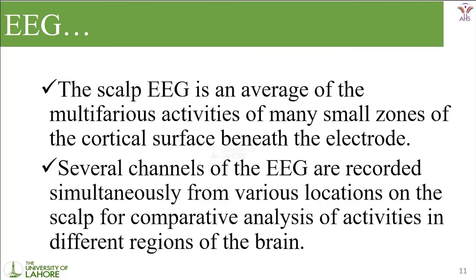Several channels of EEG are recorded simultaneously from various locations on the scalp for comparative analysis of activities in different regions of the brain. It is not like placing a single scalp electrode and catching signals from one specific area. Since we don't know which specific area controls a person's right hand in advance, we have to place several channels of EEG so that we can easily locate the area from where we are getting the signals.